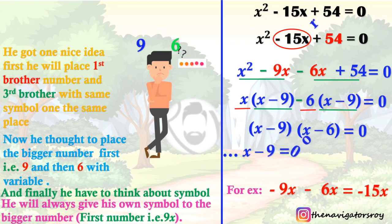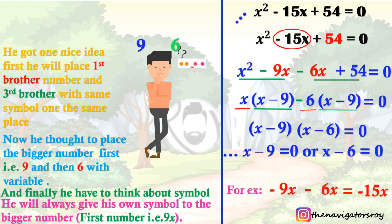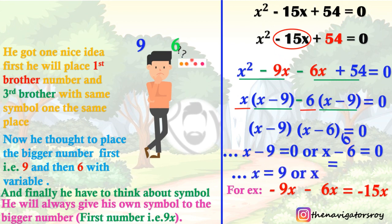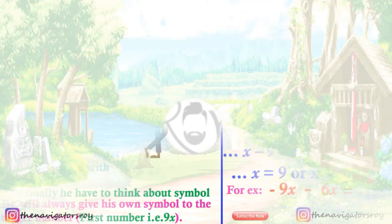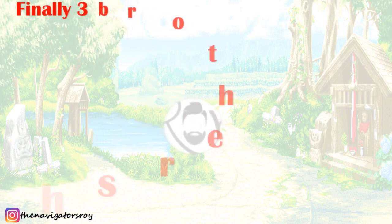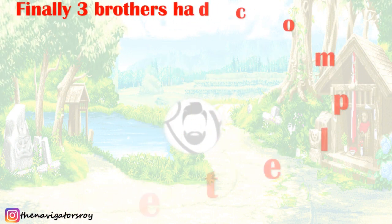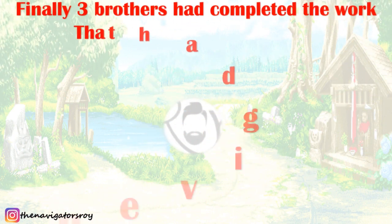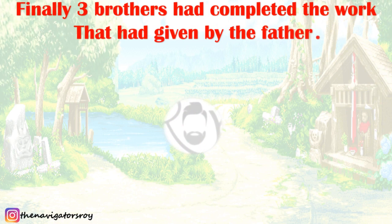So it becomes x minus 9 equals 0 and x minus 6 equals 0. Finally, if x minus 9 equals 0, then x equals positive 9. And if x minus 6 equals 0, then x equals 6. Here we find the roots, which are either 9 or 6. Finally, the three brothers have completed their work.